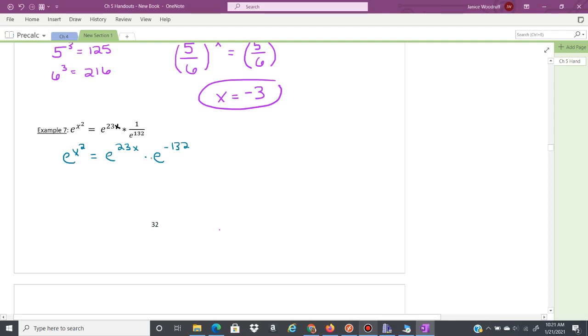and then this is going to be times e to the negative 132. Then we're going to use our rule of exponents where if we have the same base, we can combine using addition. So this is just going to become 23x plus a negative 132. So I can just put minus 132. Now I cannot actually add those together.